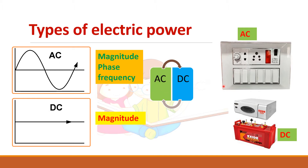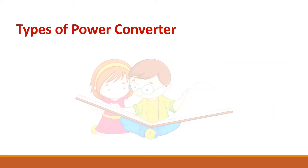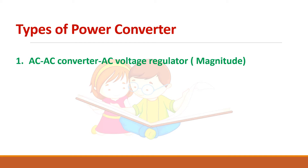The best example of this is a home inverter. When AC supply is available, you charge the battery, so AC to DC conversion takes place. Again, when power fails, the battery supplies the load connected — that is DC to AC conversion. There are four types of power converters.